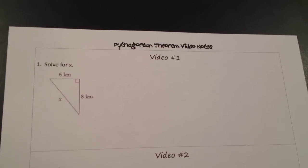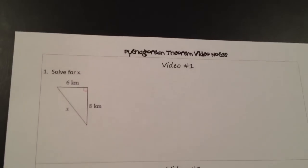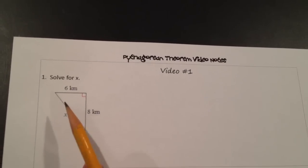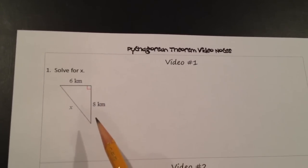So starting off with problem number one, we see that we're given a right triangle with two of the legs. One leg is 6 kilometers, the other leg is 8 kilometers.